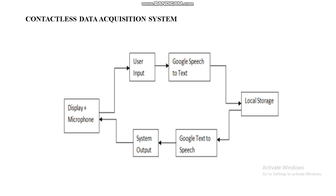For the contactless data acquisition system, the user enters data through voice via a microphone. Google Speech converts the voice into text, which is stored in local storage. Predefined text messages prompt the user to provide their data. The stored text is then converted back into speech, which is played through the speaker and displayed on the screen.